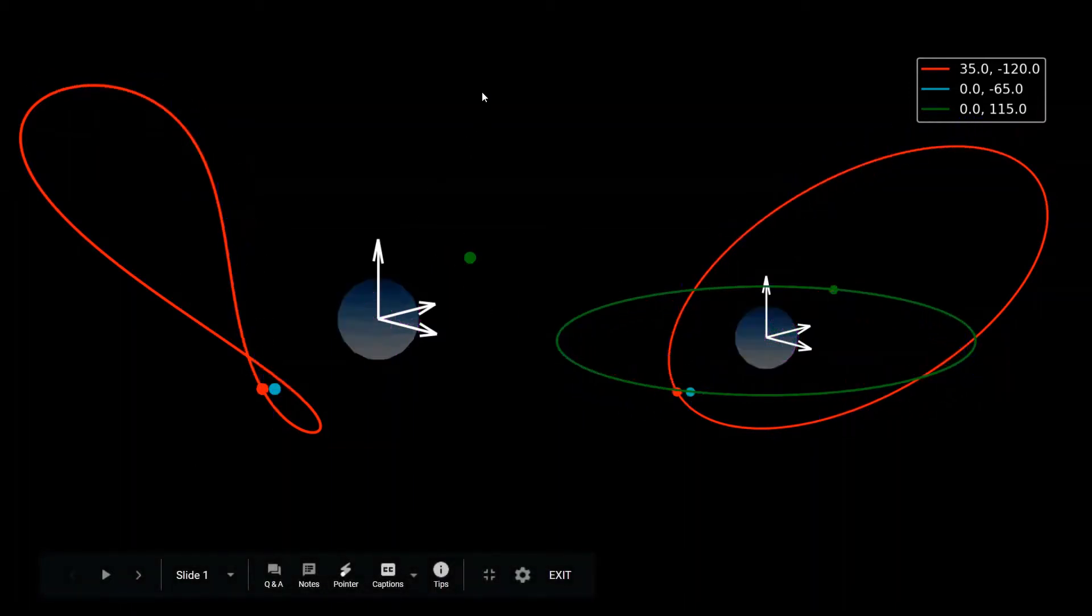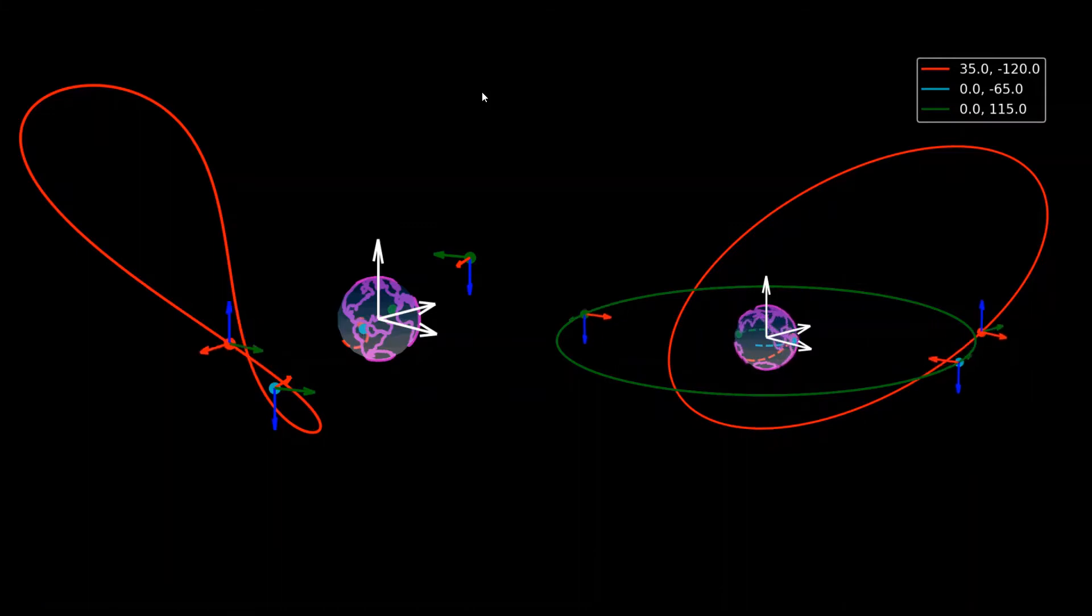Meanwhile, for the red spacecraft, in the inertial frame, its body frame is stationary, as is seen here. But from the perspective of the Earth-centered Earth-fixed frame, it is rotating with the angular velocity of the Earth, as can be seen in the animation on the left.